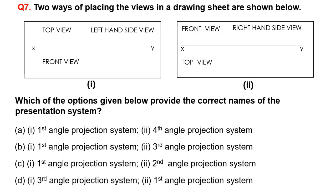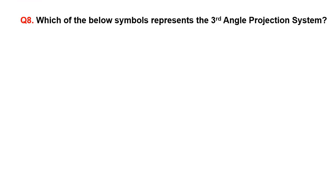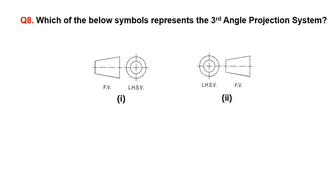A. System D, one: third angle projection system; two: first angle projection system. Which of the below symbols represents the third angle projection system? A. One, B. Two, C. None of the above.